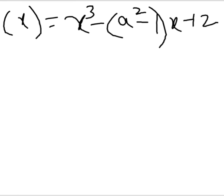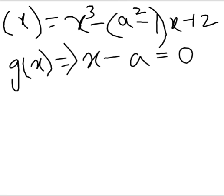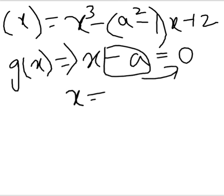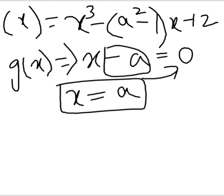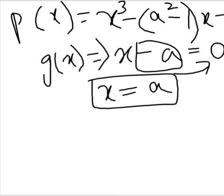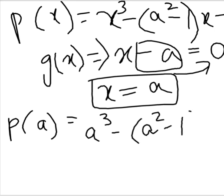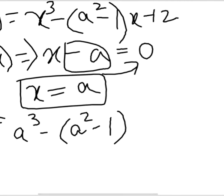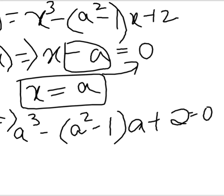As we know, it is divided by x - A. We can just equate it to 0. G(x) is x - A. When you equate it to 0, minus A goes to RHS and becomes plus A. So x = A. Now wherever you find x, just put A there. So P(x) becomes P(A). P(A) = A³ - (A² - 1)A + 2 = 0.